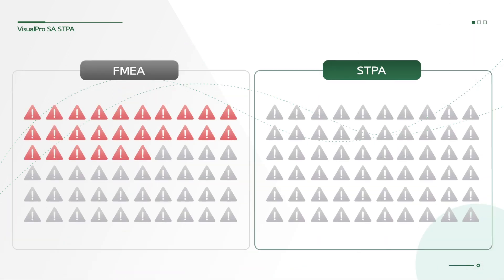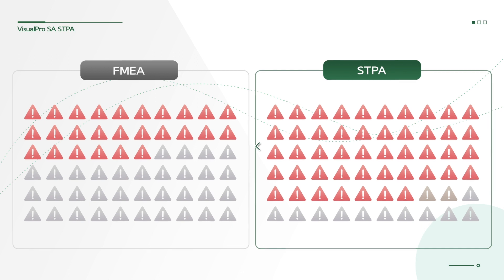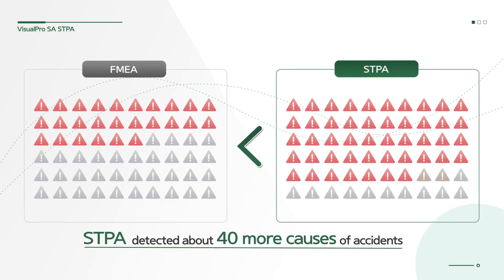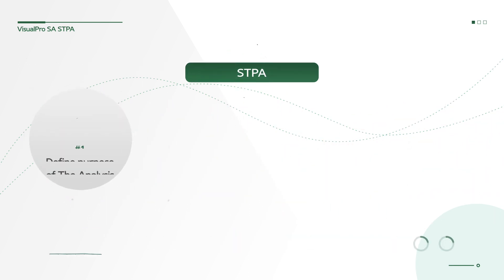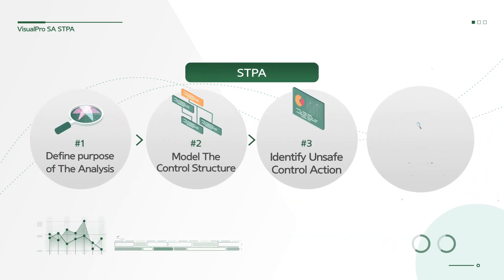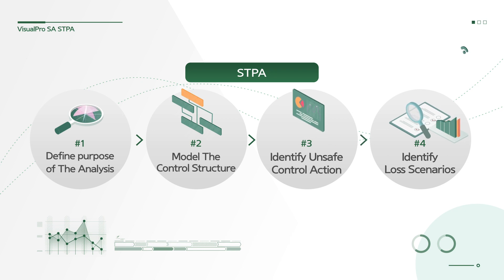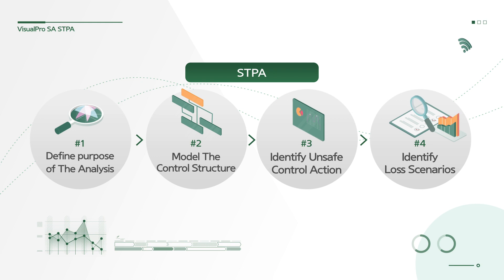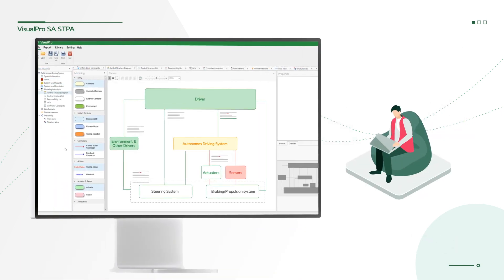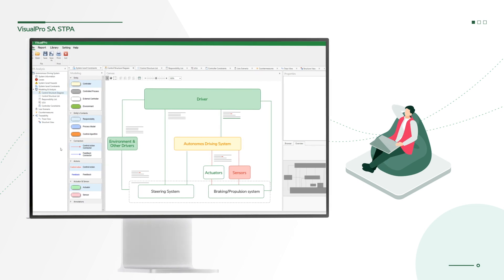A comparison of FMEA and STPA shows that STPA detected about 40 more causes of accidents than FMEA. VisualPro SA supports all STPA procedures, from identifying losses of systems to identifying requirements of systems. In addition, it provides users with various convenience features for the analysis.